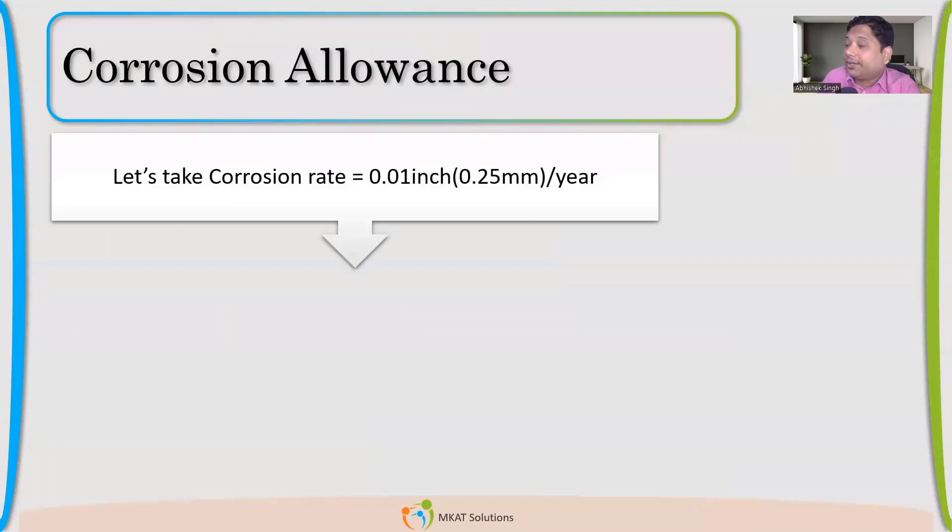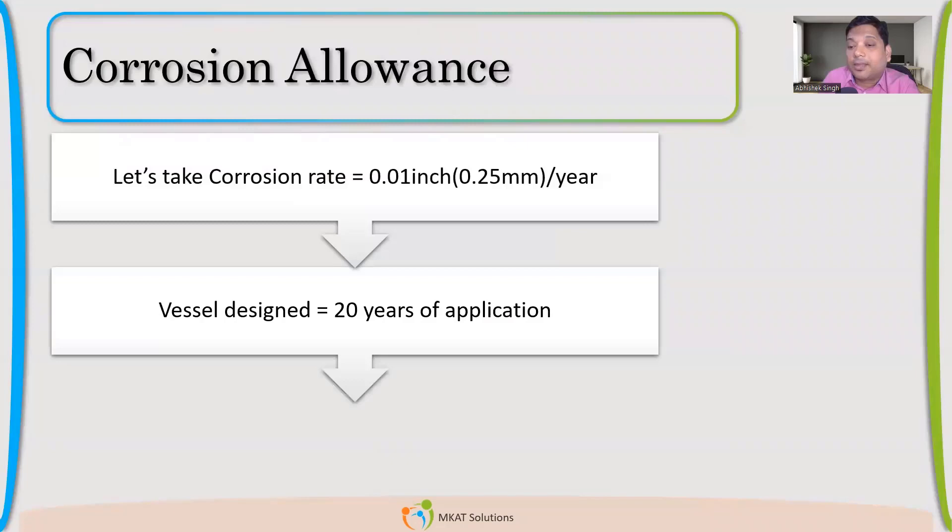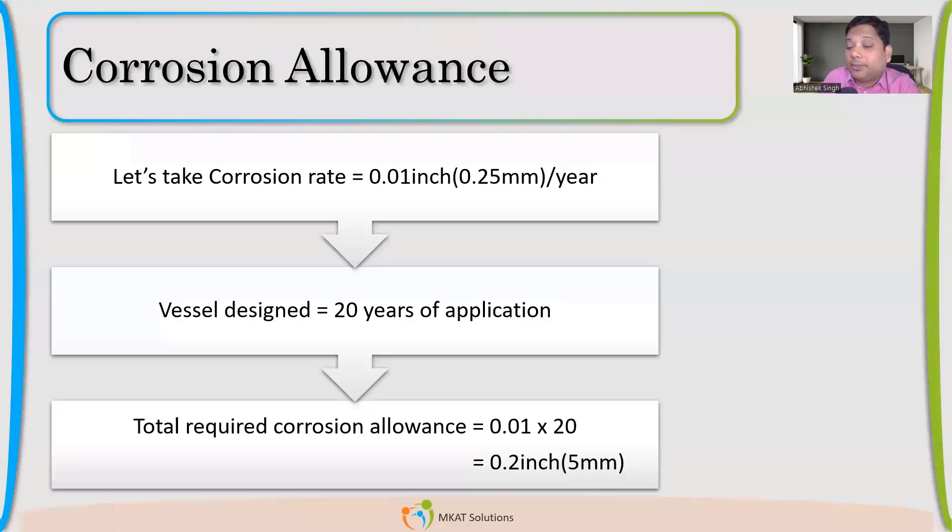Once we have the corrosion rate like 0.01 inch per year for that material, that will be very specific to the service and the material. Both are involved. Same, different material will behave differently. So, once we know this and when we know the life of that vessel for which I need to design, then we will be able to find the corrosion allowance.